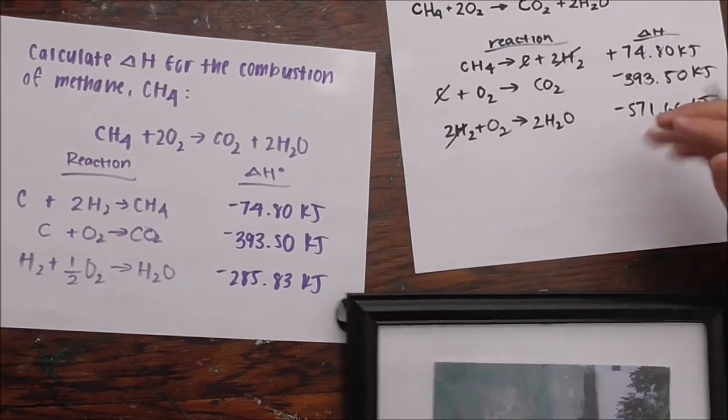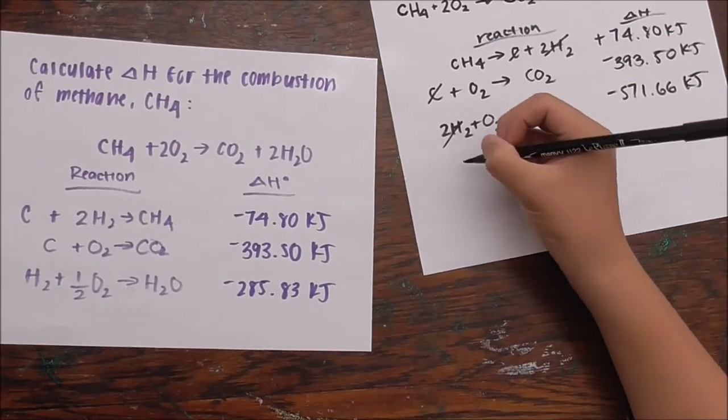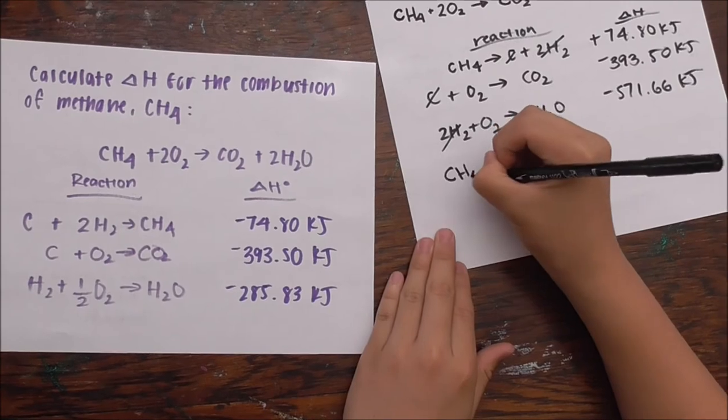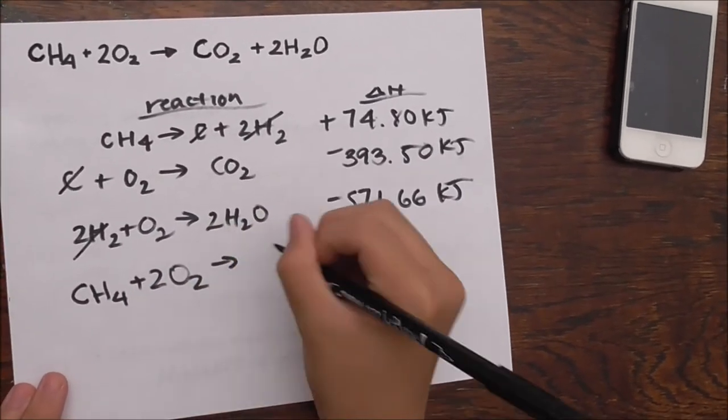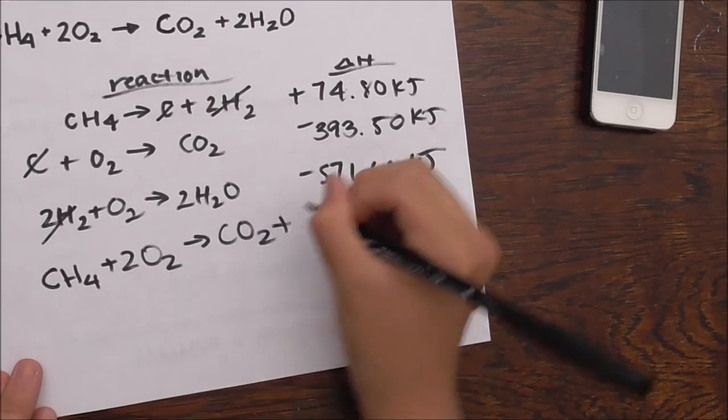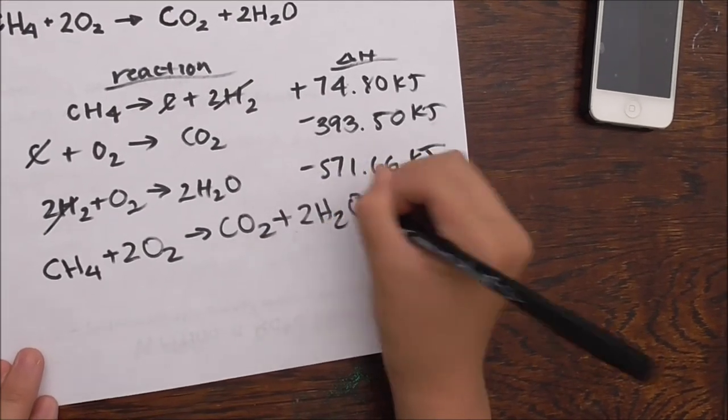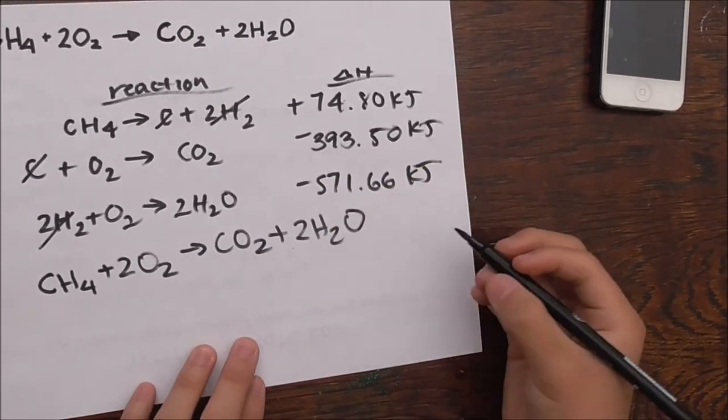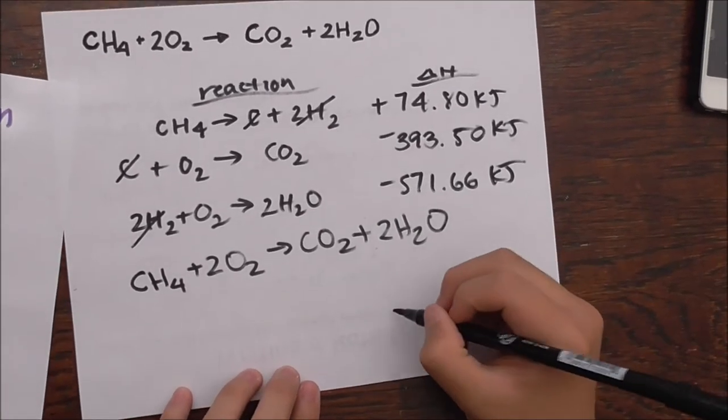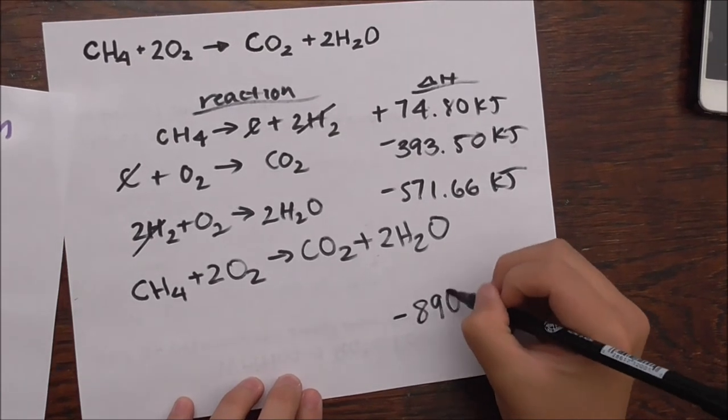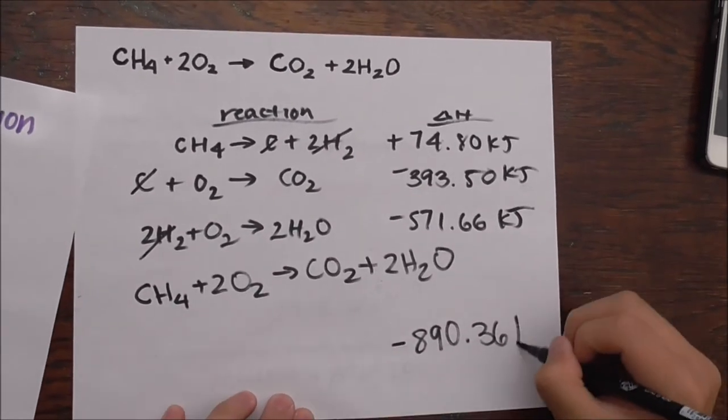Okay, it's allowed. And therefore, we're left with the reaction of CH4 plus 2O2 yields CO2 plus 2H2O. And then to calculate the delta H, we just add all these up together and we should get negative 890.36 kilojoules.